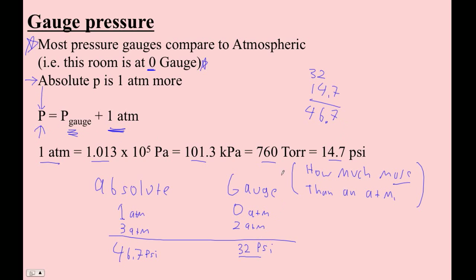What if I've got an absolute pressure of 20 psi? What would be the gauge pressure?